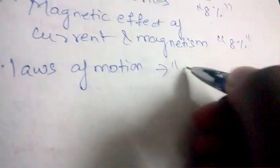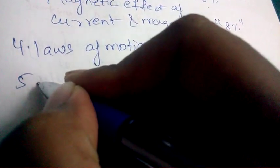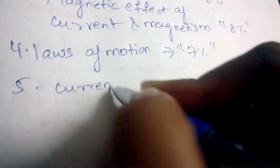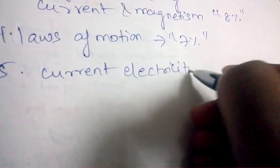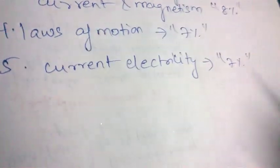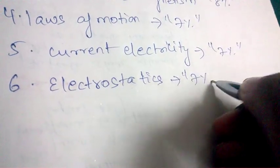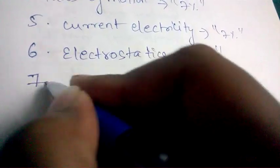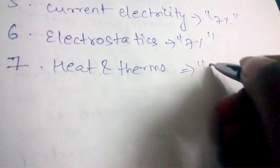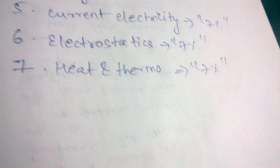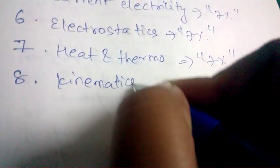The next important chapter is Laws of Motion, from which 7% of questions will be appearing. Next is Current Electricity — 7% of questions will be appearing from this chapter. Electrostatics also carries 7%, and Heat and Thermodynamics also carries 7% of questions in the physics question paper.